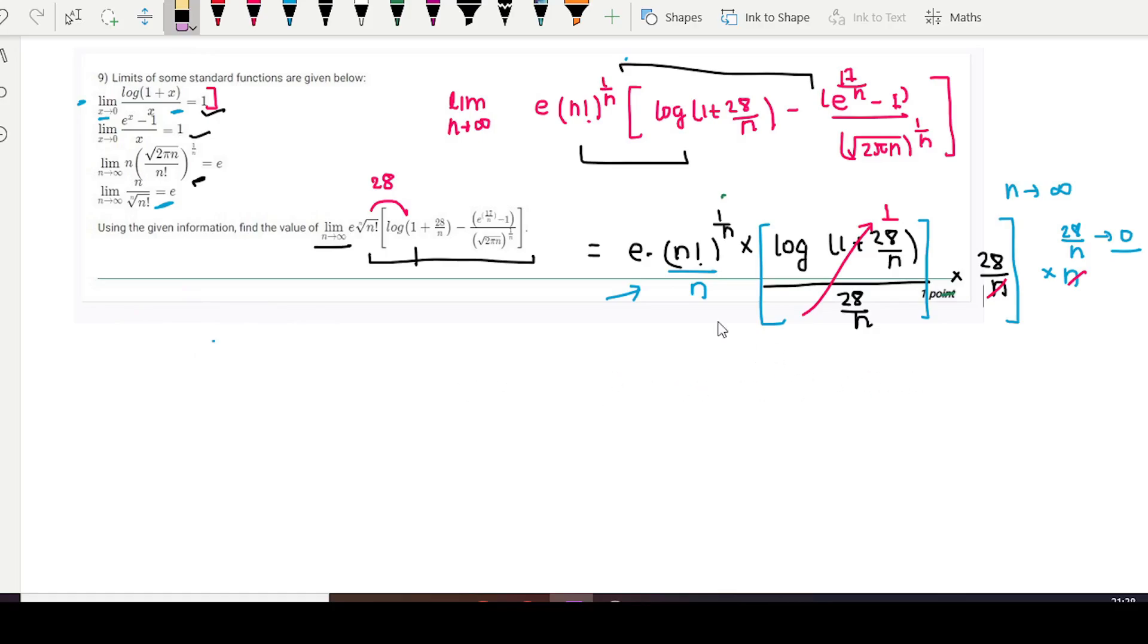That is e times n factorial raise 1 by n multiplied by e to raise 17 divided by n minus 1 divided by 2π in the whole power 1 by n. So we will try to convert first this into this form, this will into this form, and this one into this form.